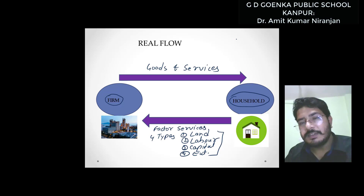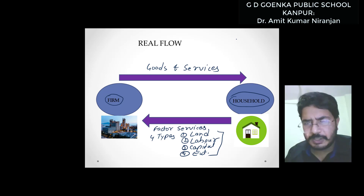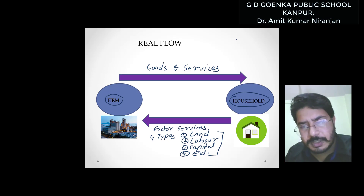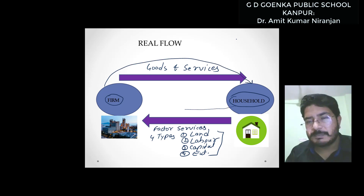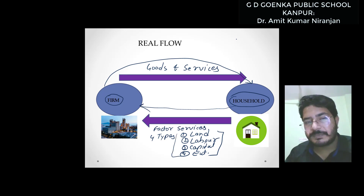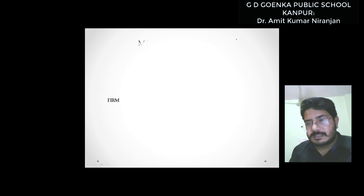Here there is no money involved. In a simple way: what household provides to firm is factor services, and what firm provides to household is goods and services. With the help of factor services, the firm produces goods and services and gives them back to the household. This is the concept of real flow.